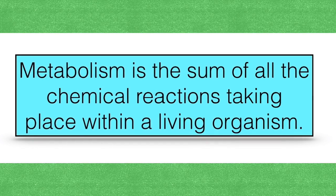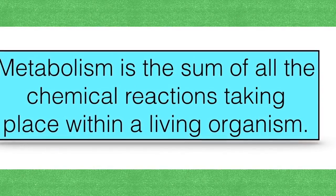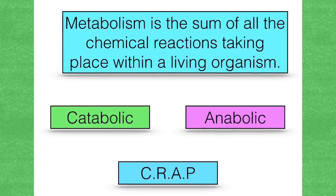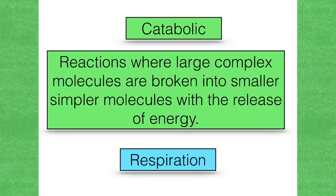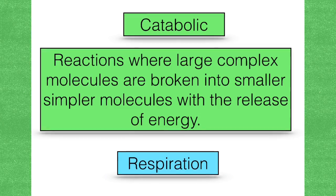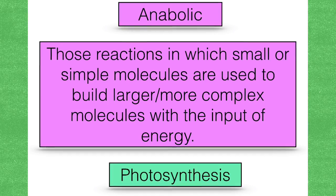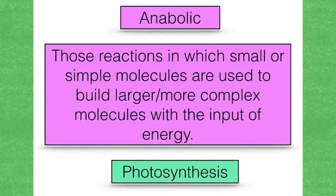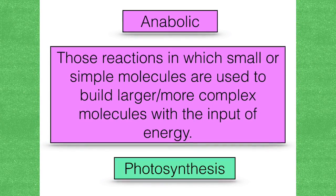This is a good point to introduce the definition for metabolism. Metabolism is the sum of all the chemical reactions taking place within a living organism. There are two categories of metabolic reactions: catabolic and anabolic. Just remember CRAP — it helps you come up with an example for both. Catabolic reactions — just think of a catastrophe — are reactions where large complex molecules are broken into smaller, simpler molecules with the release of energy; give respiration as an example. Anabolic reactions are those in which small or simple molecules are used to build larger, more complex molecules with the input of energy; photosynthesis is an example.